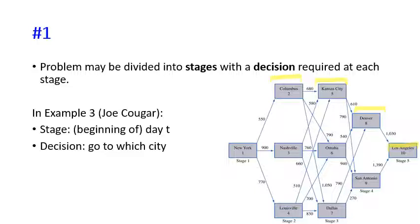At each day, Joe must decide which city to go to — that is his decision every day until he reaches Los Angeles. From the very first day starting from New York, he must decide which city to go to such that at the beginning of day two he will be in one of those cities.